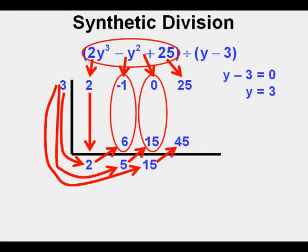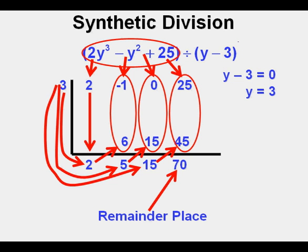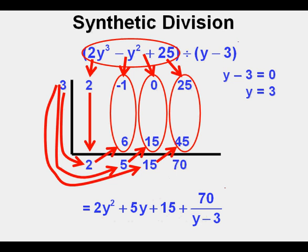Then we take 3 times 5 and get 15 at the bottom of the frame. We add 0 and 15 together and get 15 in the number or constant place. Then we take 3 times 15 and place the product 45 at the bottom of the frame. Then we place the sum of 25 and 45 at the bottom in the remainder place. We bring down our answer: 2y squared plus 5y plus 15 plus 70 over y minus 3.